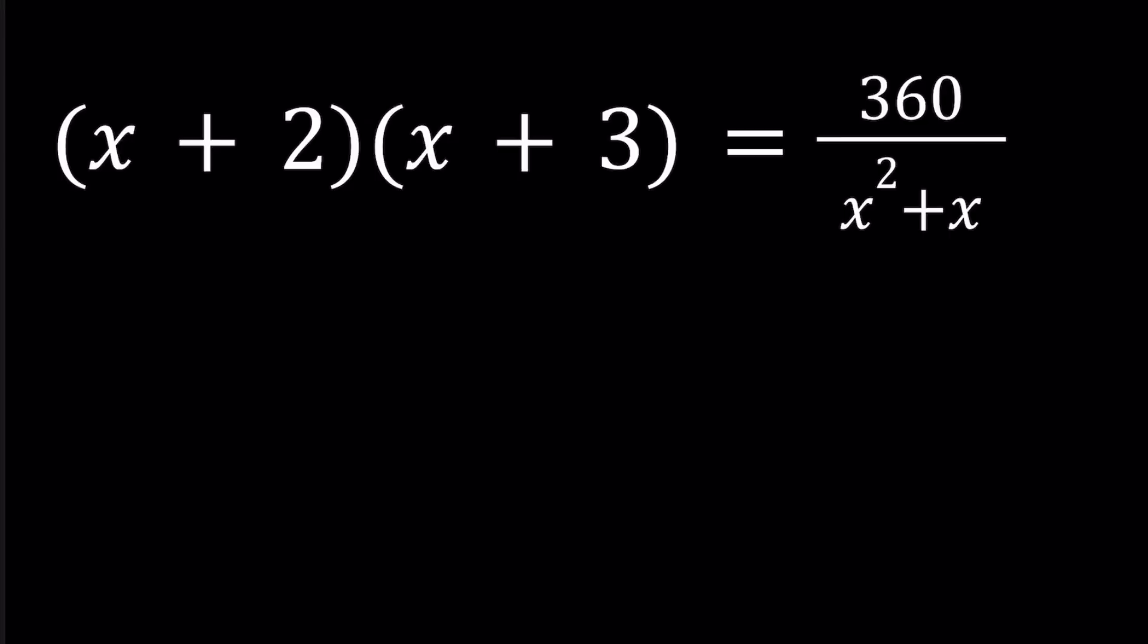Let's go ahead and multiply both sides by x squared plus x first. That way we have all the x's on one side and the 360, the constant, on the right hand side. Next we're going to factor x squared plus x because it's factorable. There's a common factor. Let's do it.